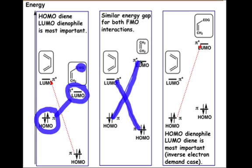On the other hand, if we append an electron-donating group to the dienophile, this raises the energy of the HOMO substantially, and now the most important interaction is the one between the LUMO on the diene and the HOMO on the dienophile.